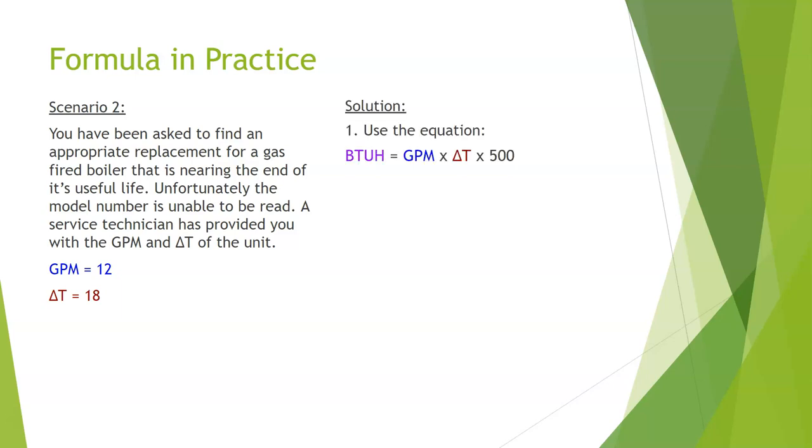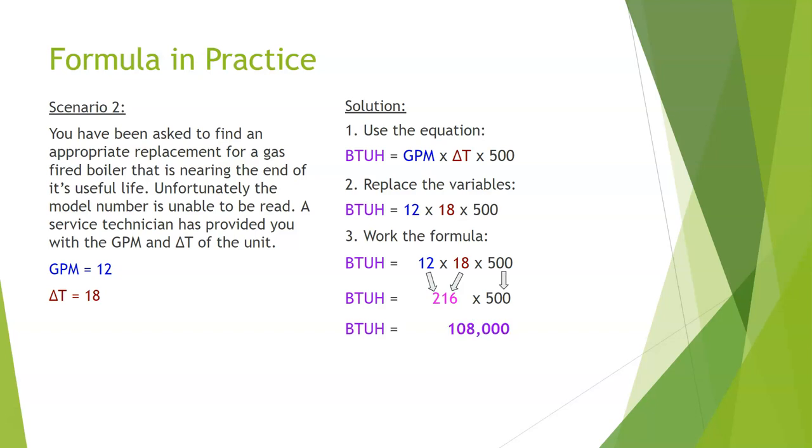Let's work the solution. First, I'm going to write down my equation: BTU equals GPM times delta T times 500. Then I replace my variables. My GPM is 12, my delta T is 18, and my magic number is still 500. I work the formula: BTU equals 12 times 18, which gives me 216, times 500. That gives me 108,000 BTUs.